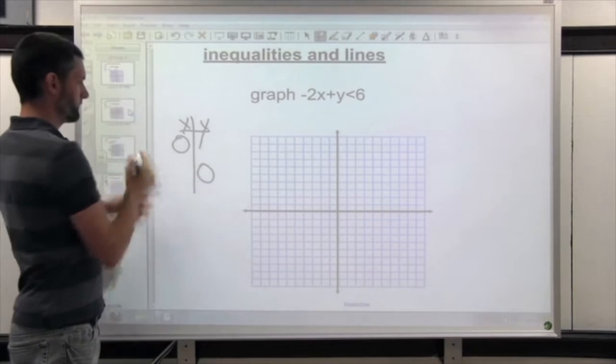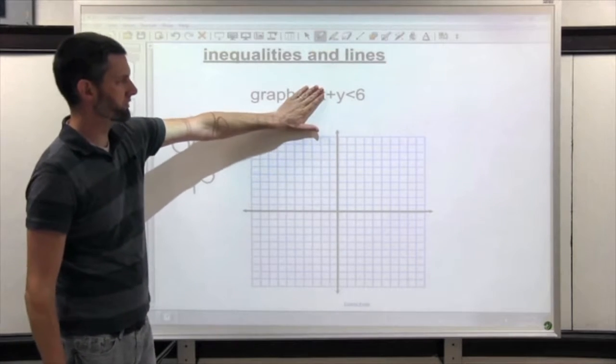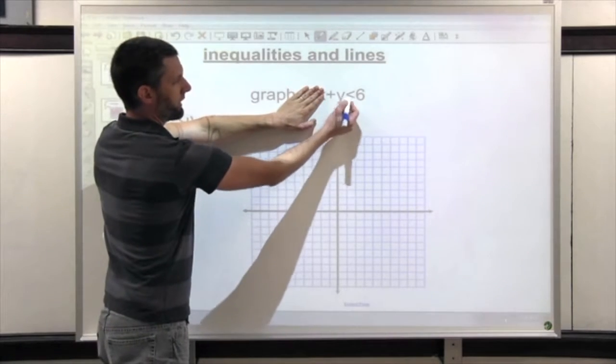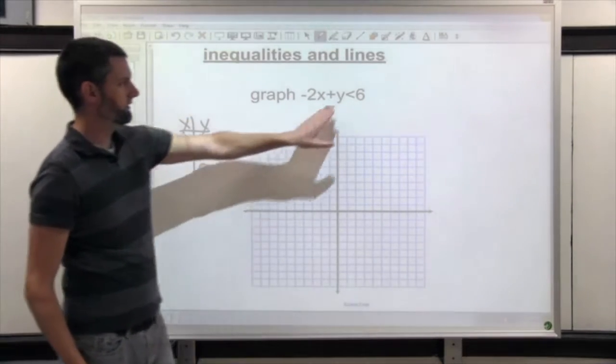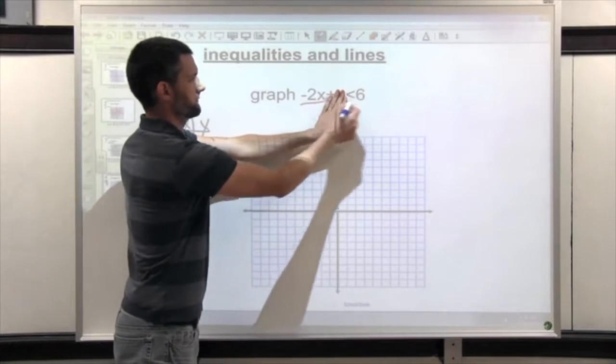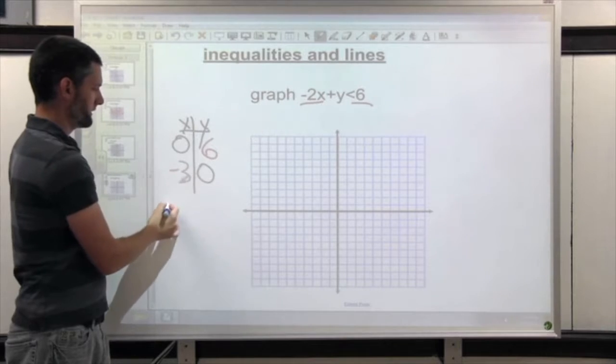And we put 0 in for x and y. So putting 0 in for x makes that term gone. We just get y equals 6. We're pretending it's an equation. We put 0 in for y. That's gone. Divide by negative 2. 6 divided by negative 2 is negative 3.